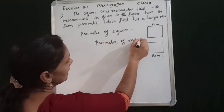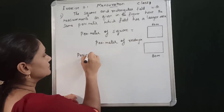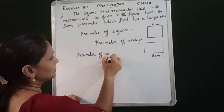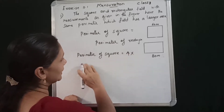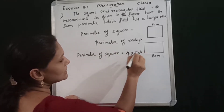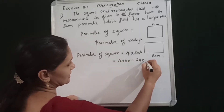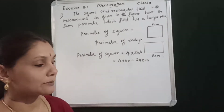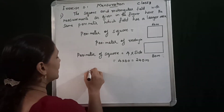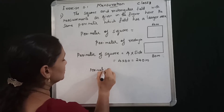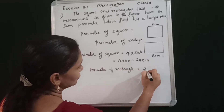The perimeter of the rectangle equals the perimeter of the square. Perimeter of square equals 4 into side. So 4 into 60 equals 240 meters. The square perimeter is 240 meters, so perimeter of rectangle equals 240 meters.